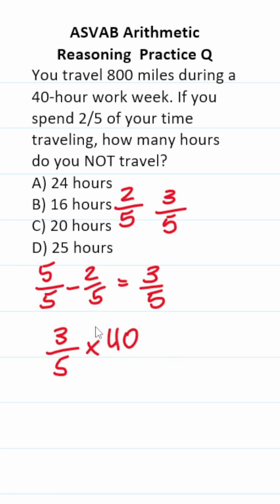So we're going to do three-fifths times 40. We can place 40 over 1, which enables us to cross-reduce this. 5 goes into 5 one time. 5 goes into 40 eight times. 3 over 1 is just 3, and 8 over 1 is just 8.